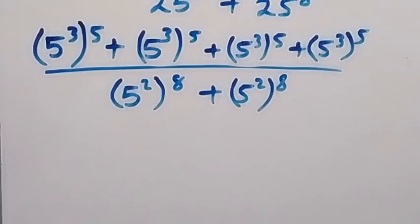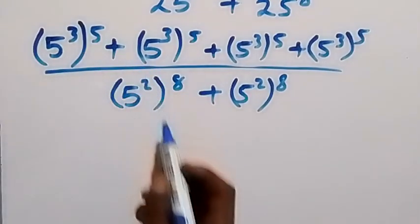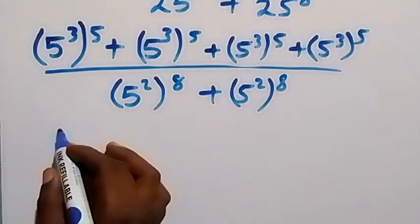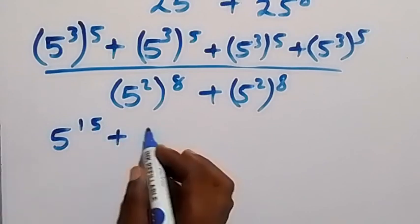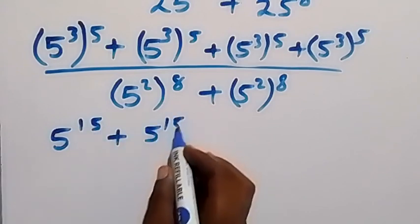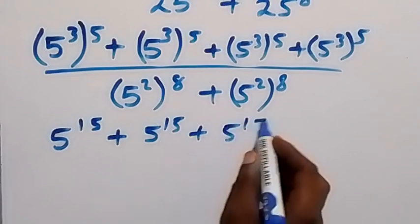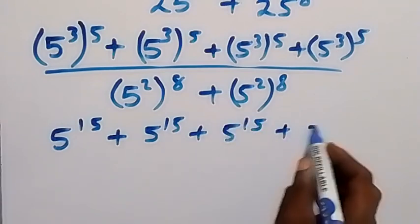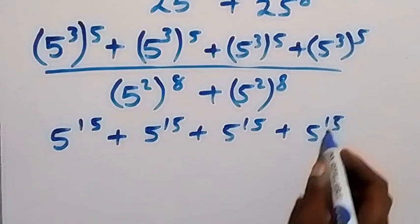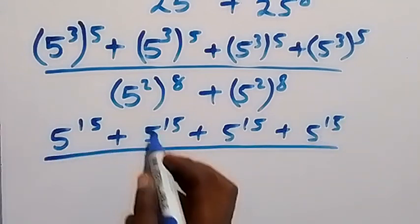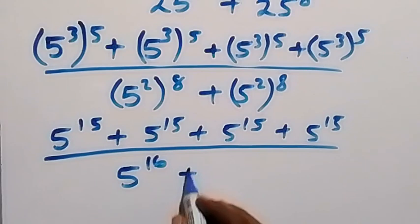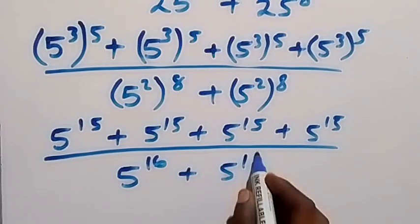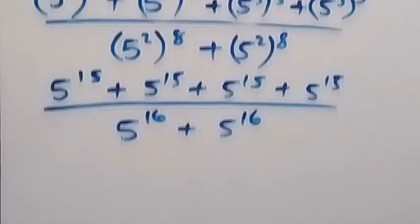In the next step we apply the law of indices and multiply out the powers. From here we have 5 raised to power 15, plus 5 raised to power 15, plus 5 raised to power 15, plus 5 raised to power 15. Divided by 5 raised to power 16, plus 5 raised to power 16.